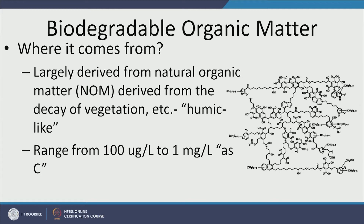Humic acid is one example of natural organic matter. Natural organic matter is organic matter in nature that we are unable to fully characterize because its chemistry and structure are very complex, making it really hard to measure directly. As a shortcut, we convert everything into how much carbon is present.